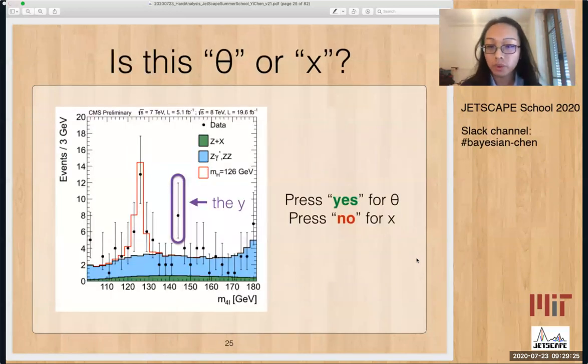So now let's have a short quiz. Here is a mass distribution of the four lepton where you can see there's a Higgs, both Higgs peaks here which looks very nice. Now the question here is that the Y range here, is that a theory parameter or is it the data? Please press yes or no.